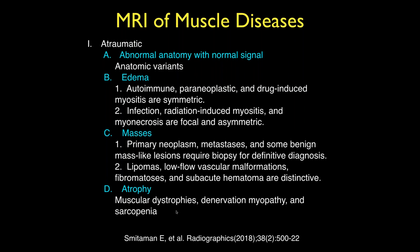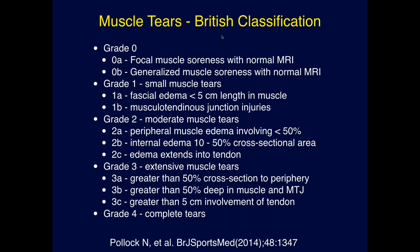There are also acute injuries, typically muscle tears. There's a British classification some people in the sports medicine world follow. Grade zero is just muscle soreness with a normal MRI — typically delayed onset muscle soreness syndrome. It occurs starting about 24 to 48 hours after exercise, usually peaks at two to three days, and is normally gone by seven days.